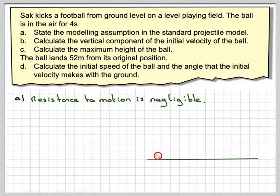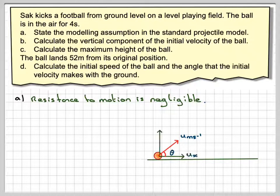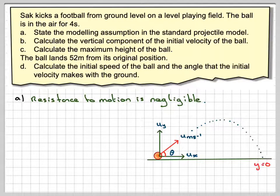If we draw a diagram, so we've got a ball, we've got initial velocity, it's split into two components, ux and uy, and we've got some sort of projectile motion going here.